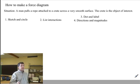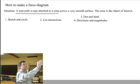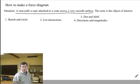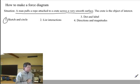In this situation, we're going to work with this. A man pulls a rope attached to a crate across a very smooth surface. Step one of making a force diagram is to sketch the situation and circle the object of interest.